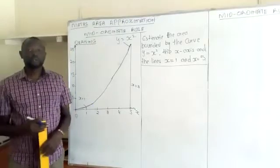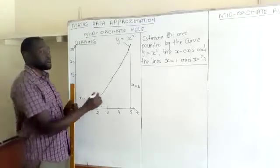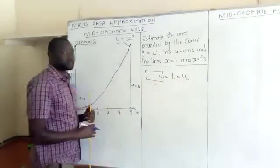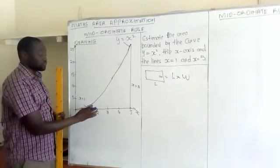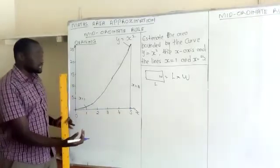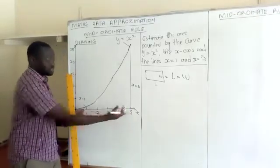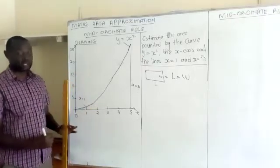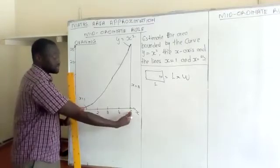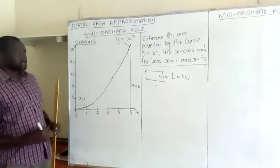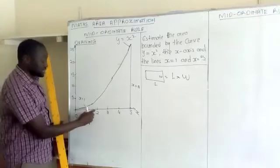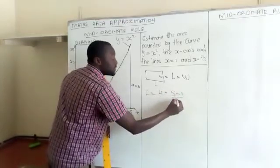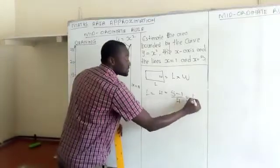In the mid-ordinate rule, we divide this region into rectangles. The area of a rectangle is given by length times width, so we divide this region into rectangles of equal widths. The total length is five minus one, which equals four. If we need four rectangles, each has a width of one unit; if we need two rectangles, the width would be four divided by two, giving two units.